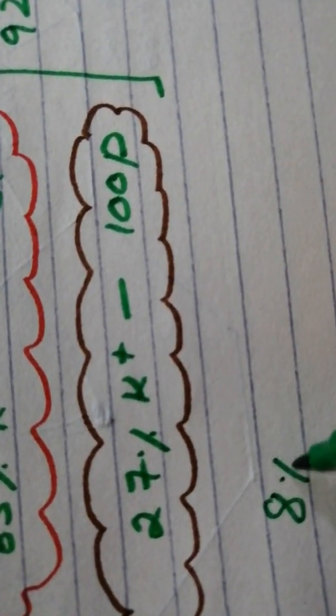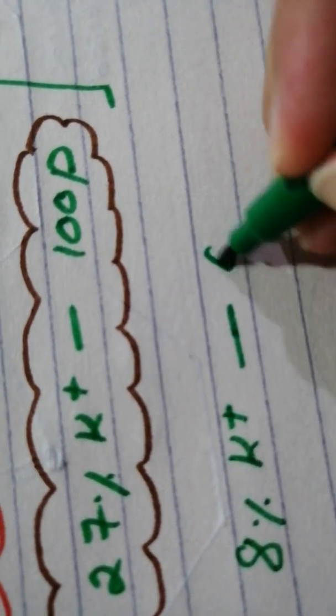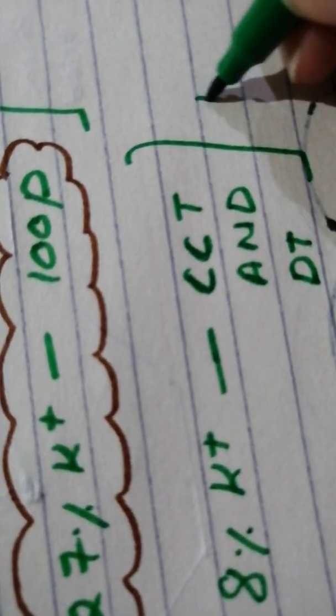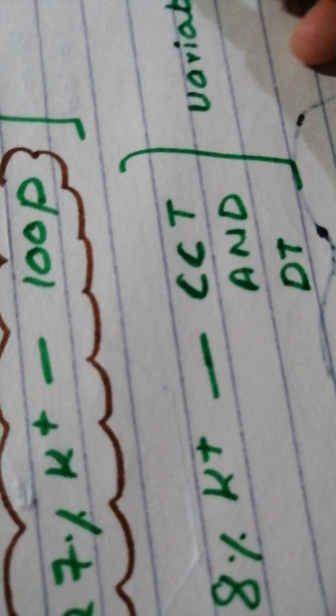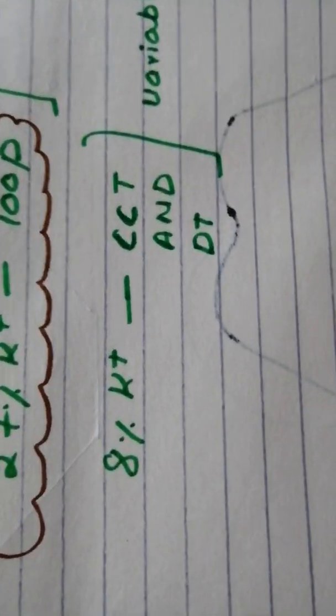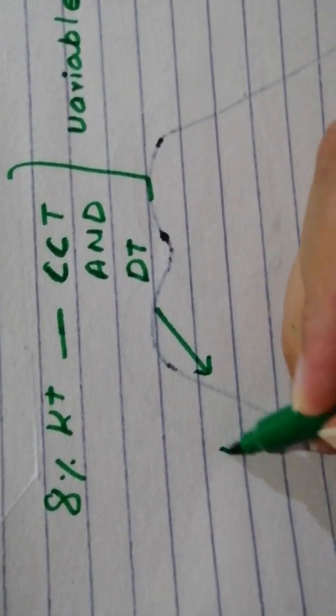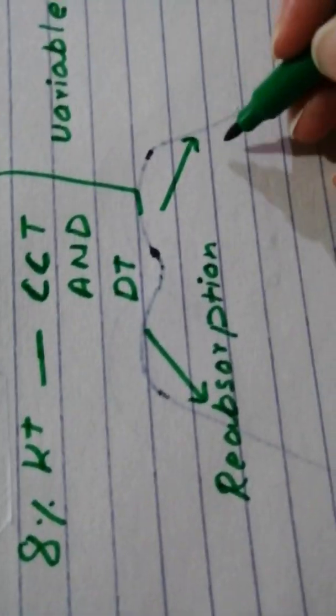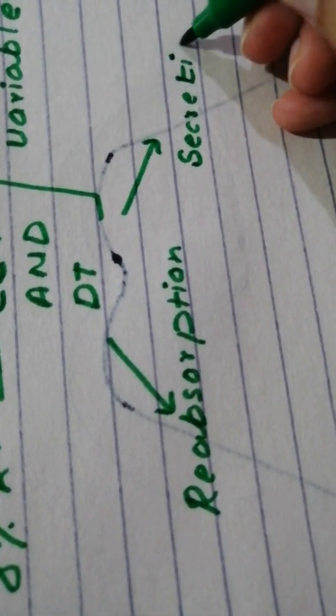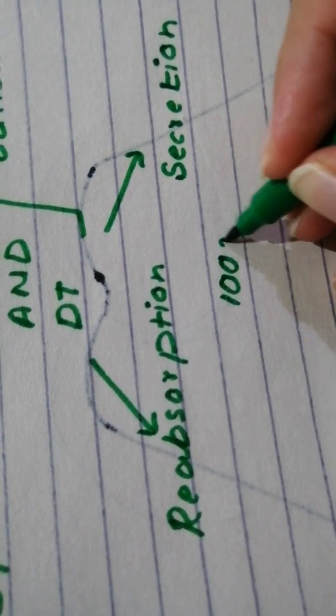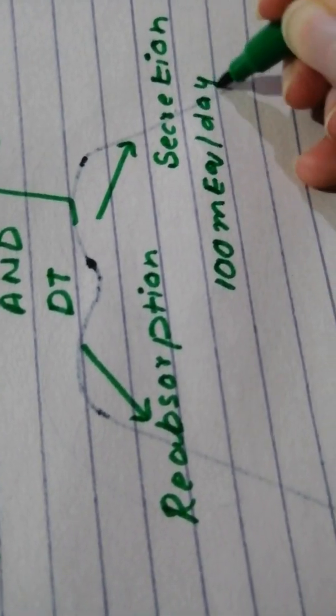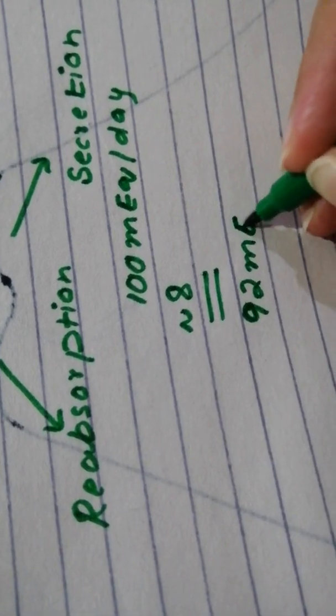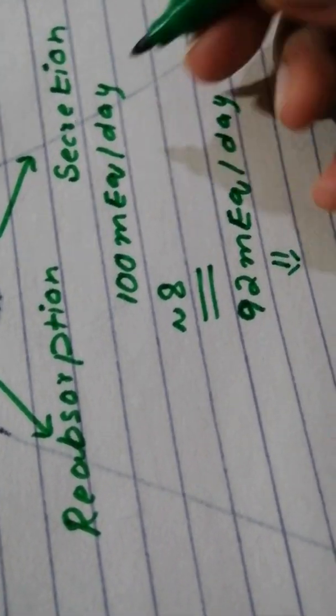The remaining 8% potassium in the cortical collecting tubule and distal tubule is variable - this is going to depend on your intake. This is variable. The cortical collecting tubule and distal tubule can do both reabsorption and secretion. That is the primary means of regulating potassium concentration in day-to-day life.